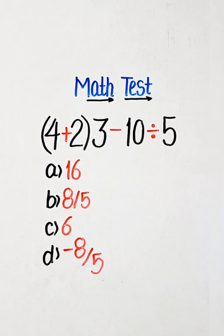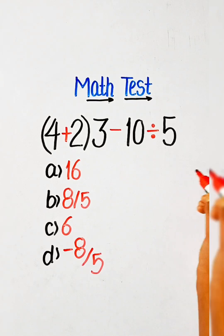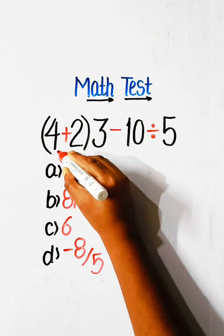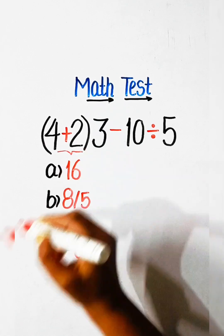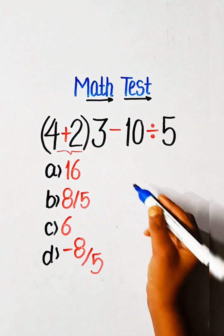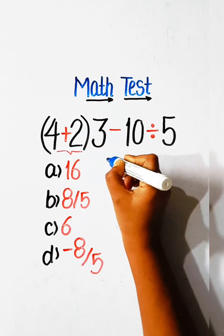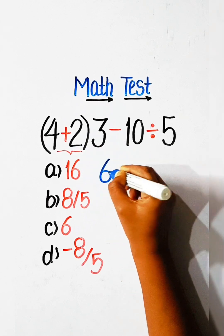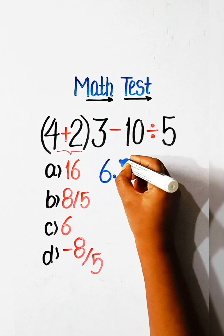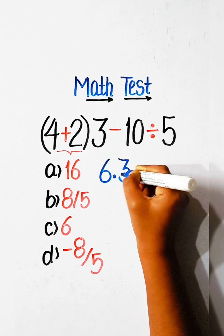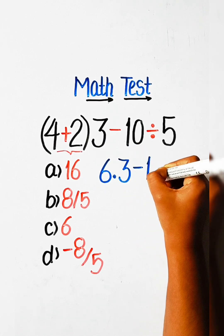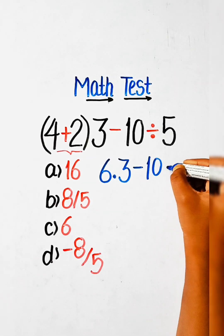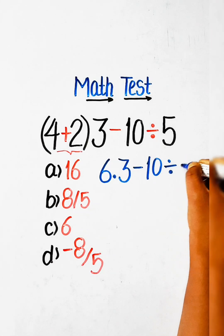Comment your answer. Let's solve this. First of all, we have to solve the bracket part: 4 plus 2 is 6, multiplied by 3, minus 10 divided by 5.